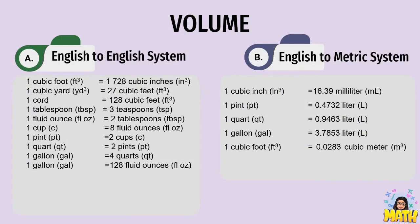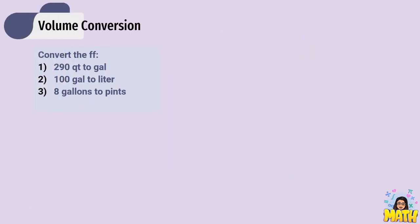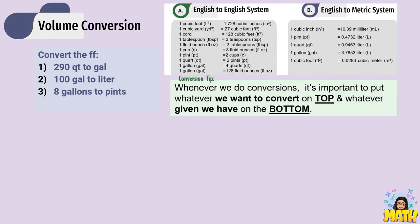The last topic is volume. Volume is the amount of space in a 3D figure, so units are in cubic units. For the English system, we have cubic foot, cubic yard, cord, tablespoon, ounce, cup, pint, quart, and gallon. For English to metric, we convert to milliliters, liters, or cubic meters. Let's have examples for volume conversion, guided by this conversion table and following the same steps.